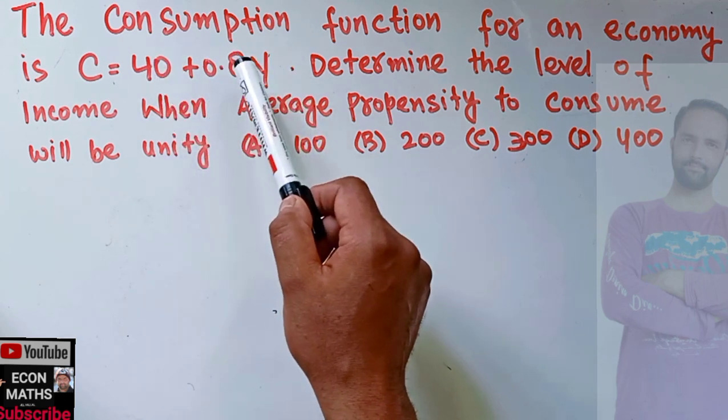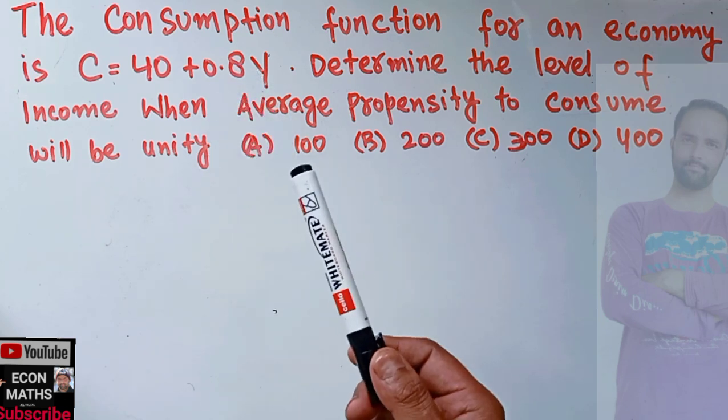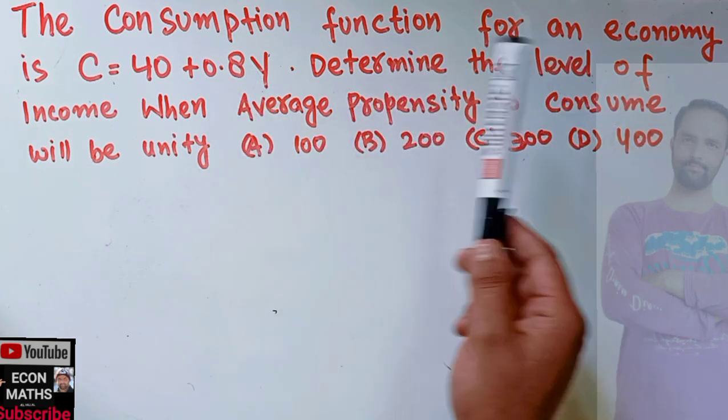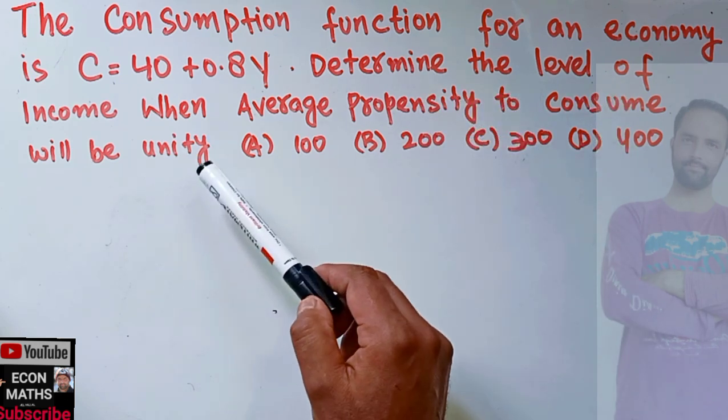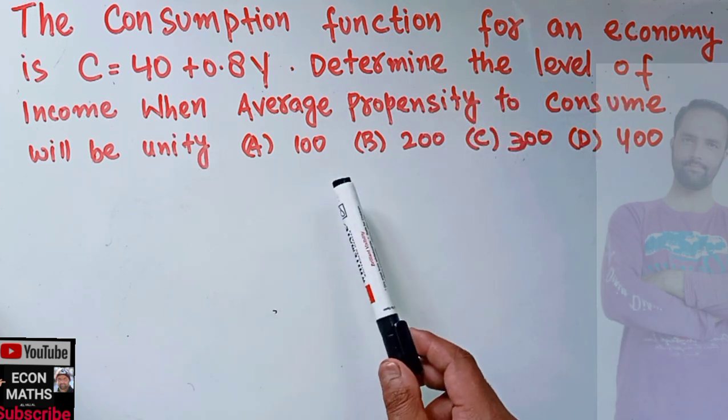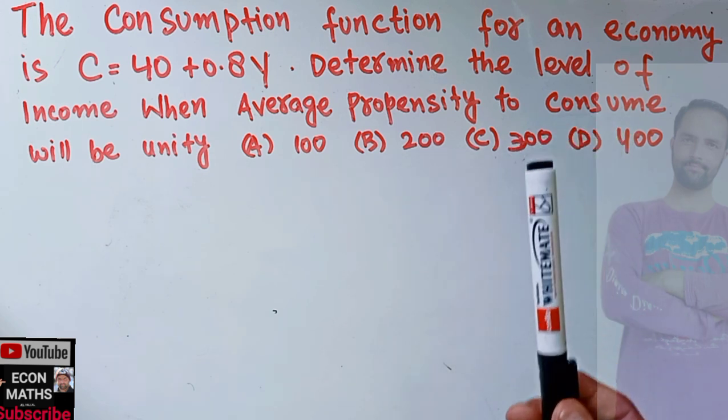Here we need to find out the level of income when average propensity to consume is equal to unity. The options are 100, 200, 300, and 400. We need to check out the correct option here.